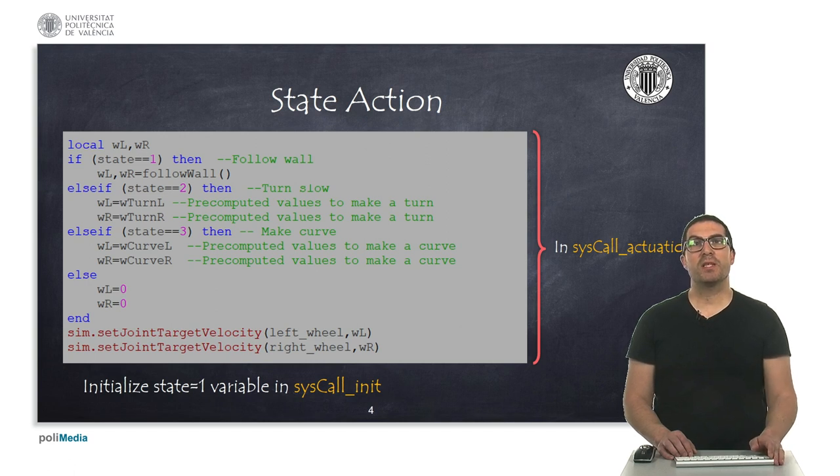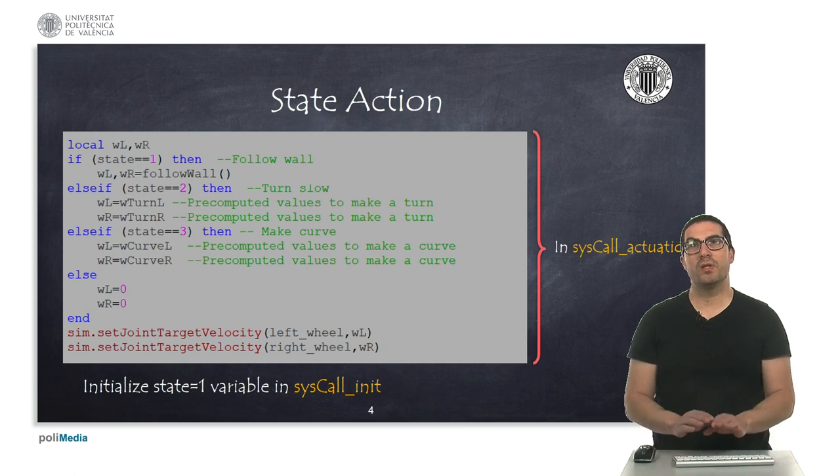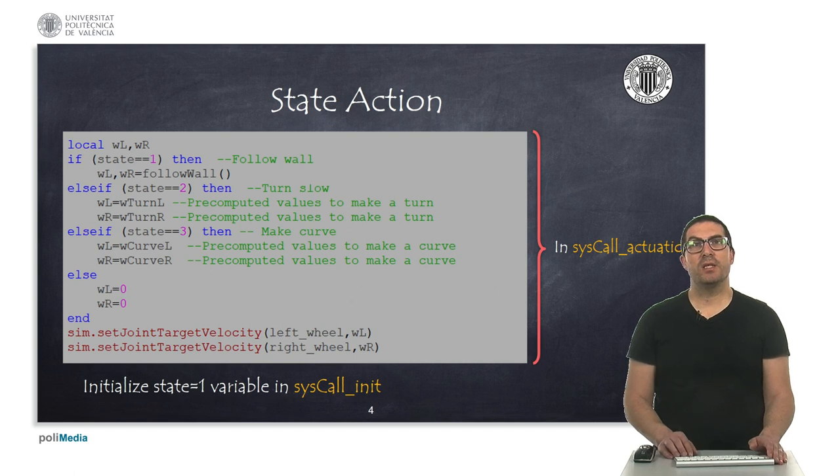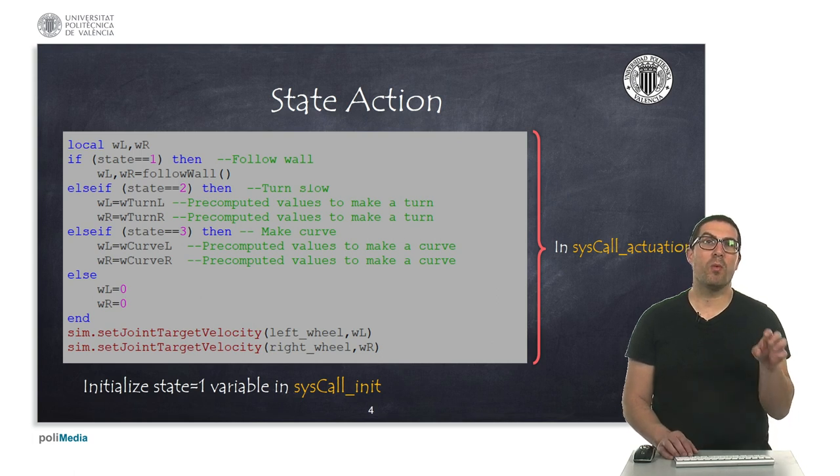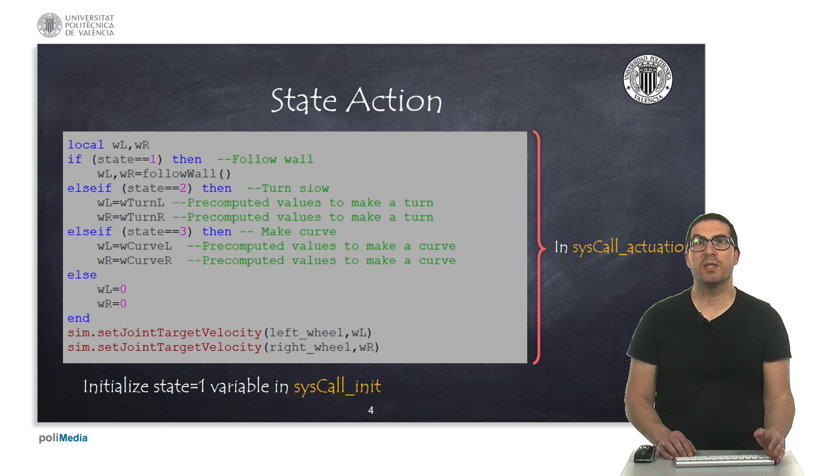To implement this algorithm, we have divided the problem into two different stages: actuation and sensing. It is clear that actions to be taken by the robot will be implemented in the syscallActuation function. And all the conditions that allow us to move from one state to another will be implemented in the sensing stage.